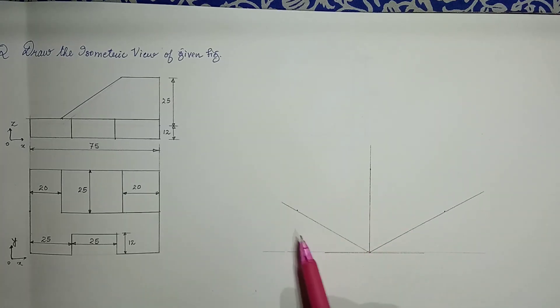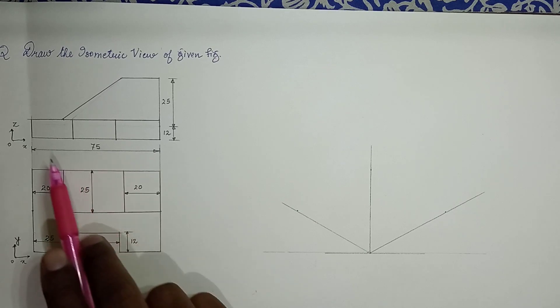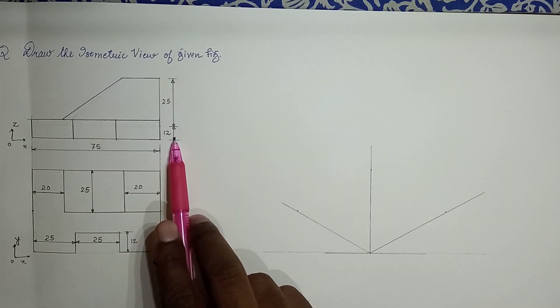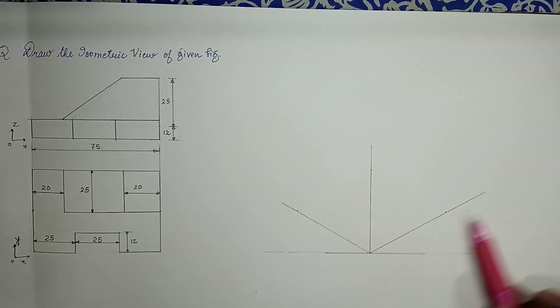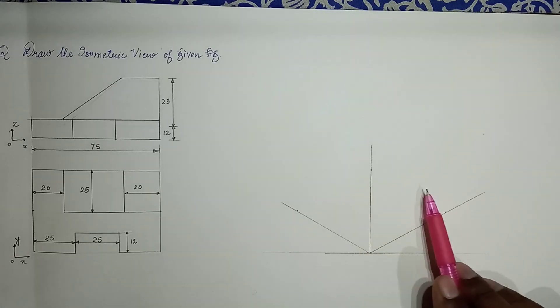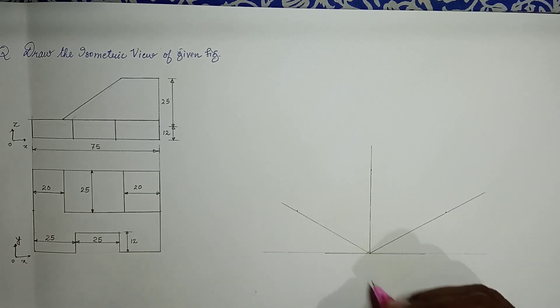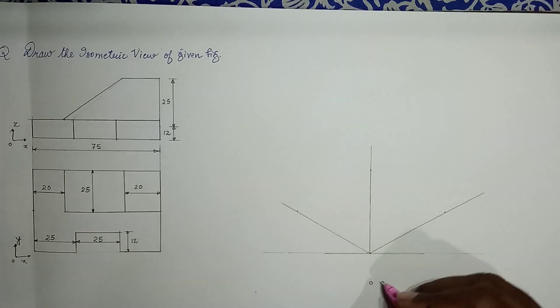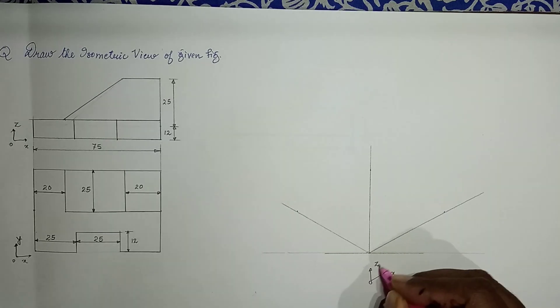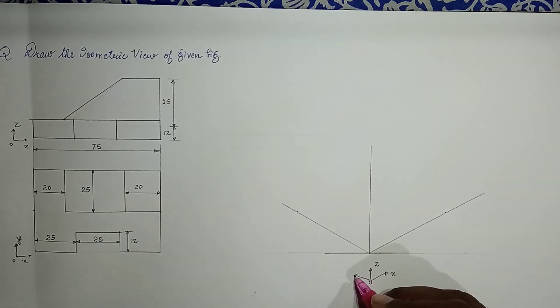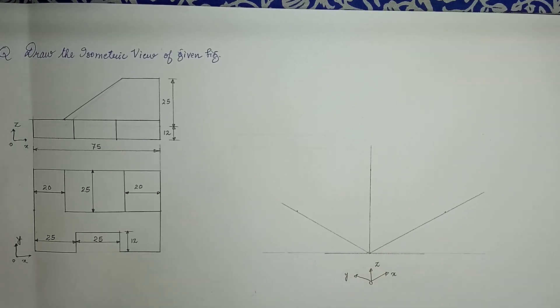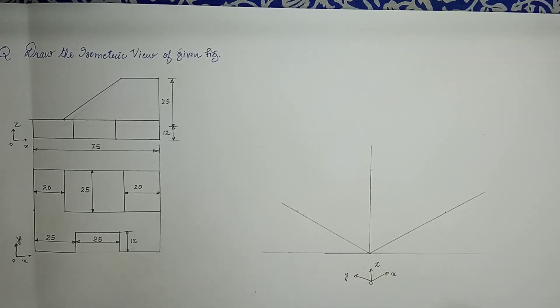In other terms, this is length, this is the height, and this is the width. In the front view, we are seeing length and height, so it is in the x-z plane. Similarly, if you look at the top view, what is visible is x and y.